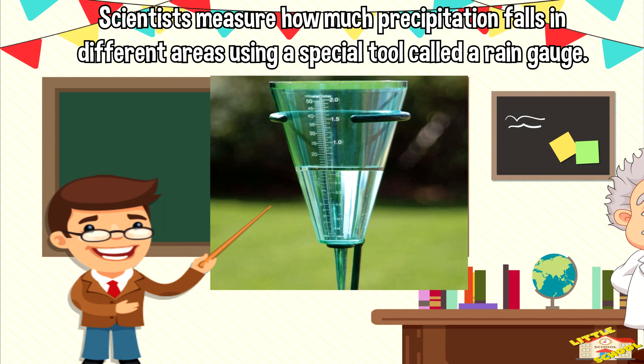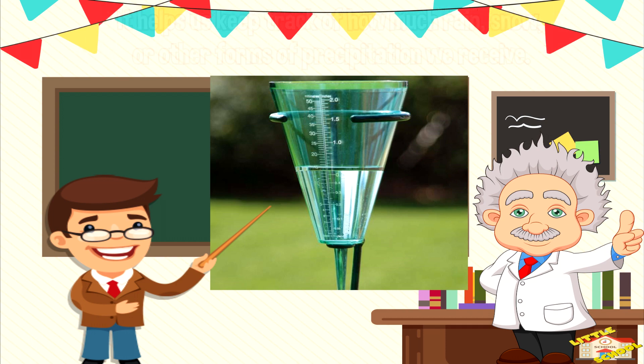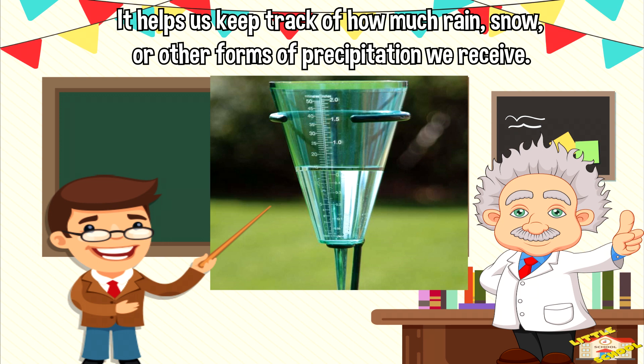Scientists measure how much precipitation falls in different areas using a special tool called a rain gauge. It helps us keep track of how much rain, snow, or other forms of precipitation we receive.